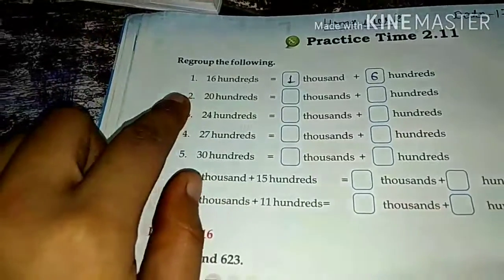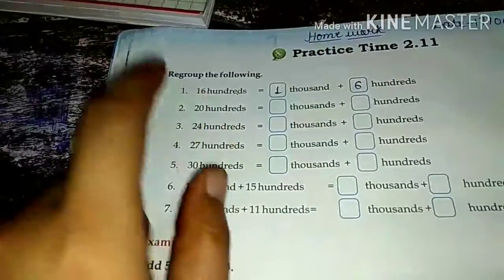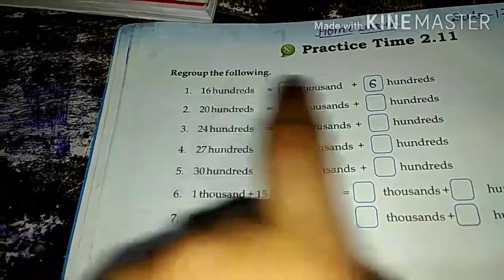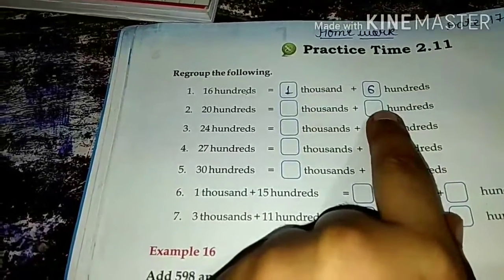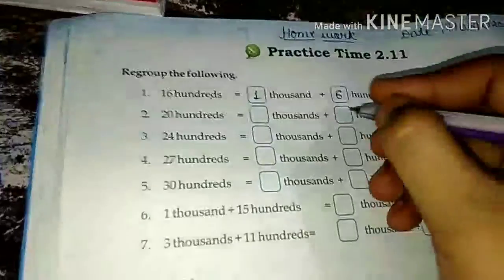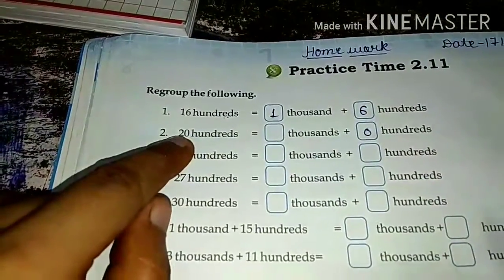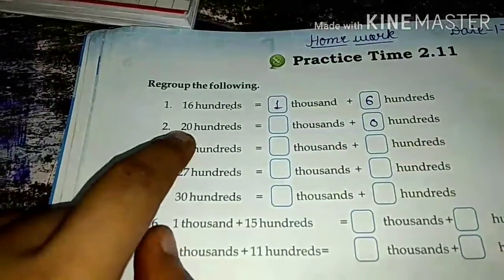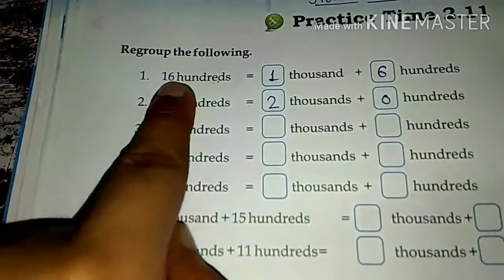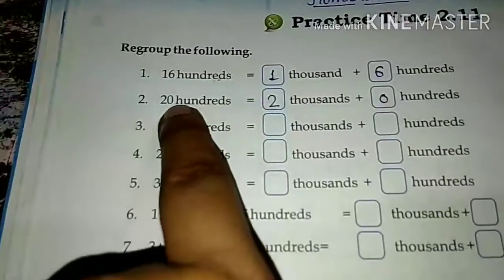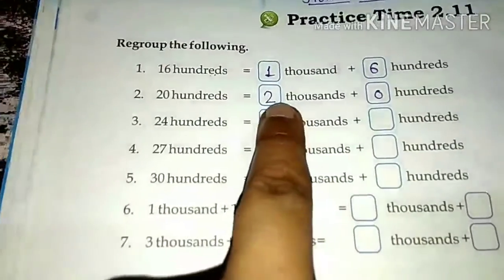Our second question is twenty hundreds. Now, how do we change this into thousands and hundreds? The first number is zero, so what will be in hundreds? Zero — so here we write zero. And what will be in the second number? Two. So what will be in thousands? Two — so here we write two. Summary: sixteen hundreds gives six hundreds and one thousand; twenty hundreds gives zero hundreds and two thousand.